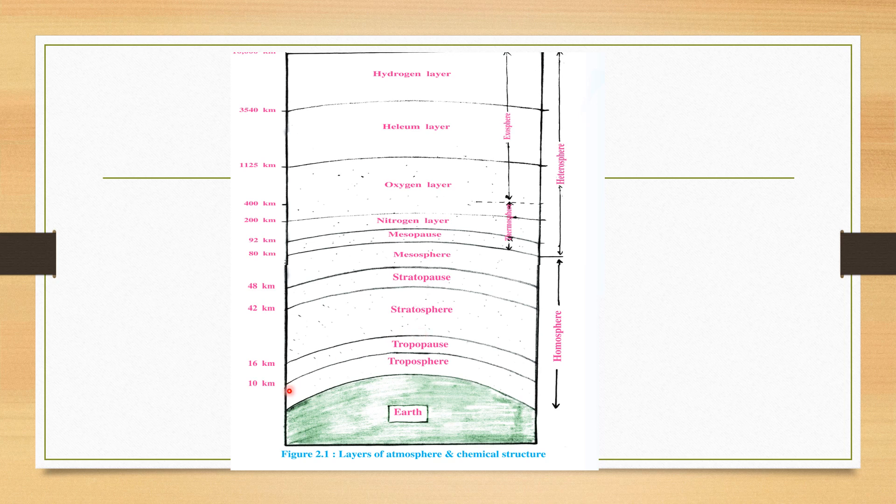So this is a diagram denoting Earth and troposphere. Just see the height: 10 km. Then, this is a boundary called tropopause. Then, after this boundary comes another layer: stratosphere, 42 km. Then, after that, there is a boundary called stratopause. Then, it comes to mesosphere. So we say that homosphere extends till mesosphere, 80 km.